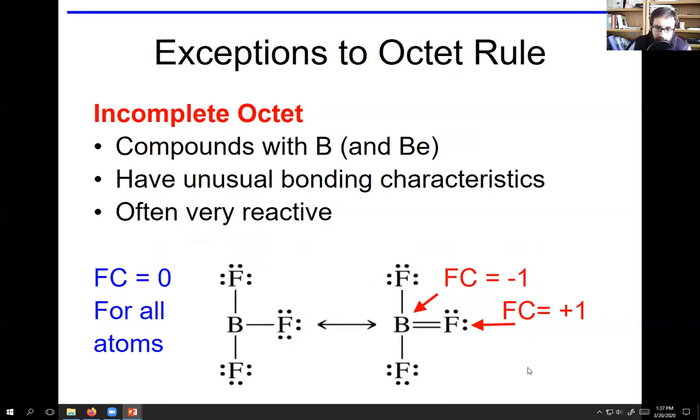This is an exception to the octet rule. The reason where this exception comes to place is because boron is pretty electropositive and fluorine, as we know, is the most electronegative element. And so fluorine really wants electrons. If you calculate the formal charges for the structure on the right, fluorine is going to have a formal charge of plus one. Fluorine has seven valence electrons minus the four non-bonding electrons and minus the two bonds. Seven minus four minus two is one.